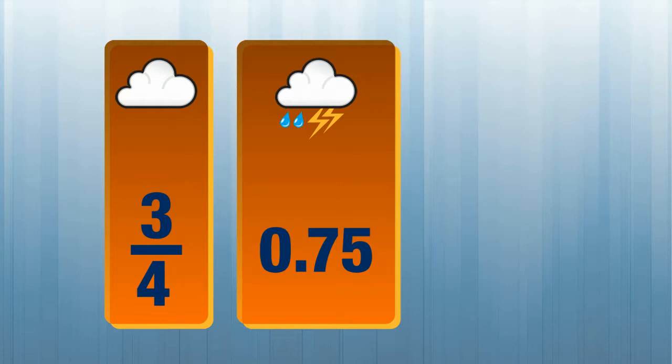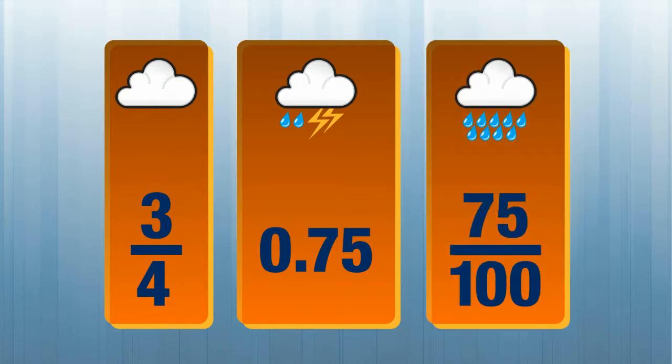With three-fourths, you see the numerator and the denominator. With 75 hundredths, you only see the numerator. The denominator is determined by place value. In this case, it's hundredths. I could also write it as a fraction. That's why we say 75 hundredths.